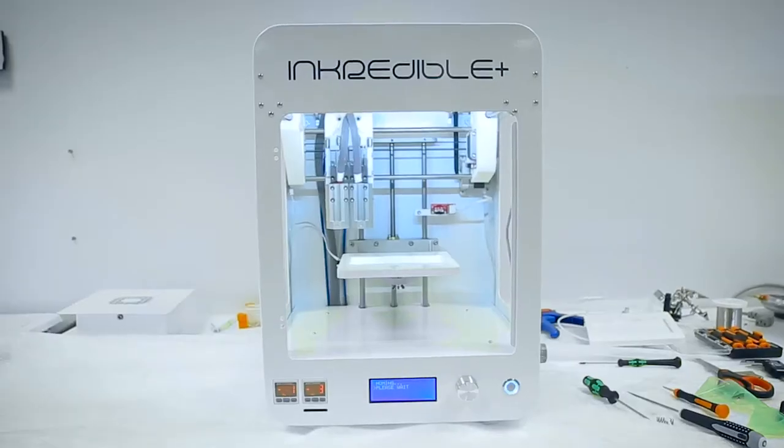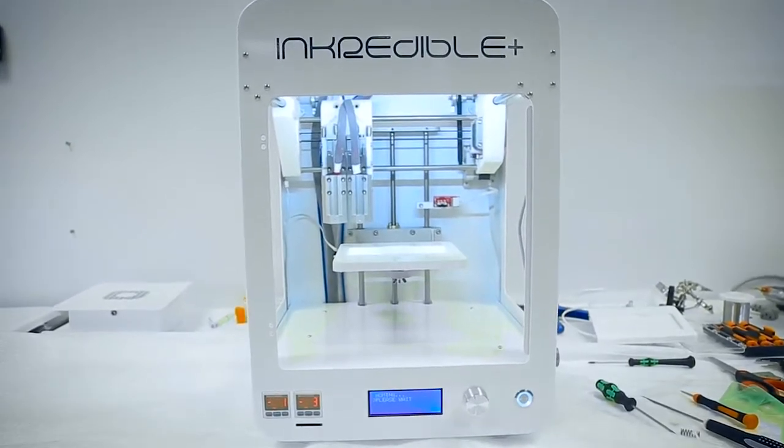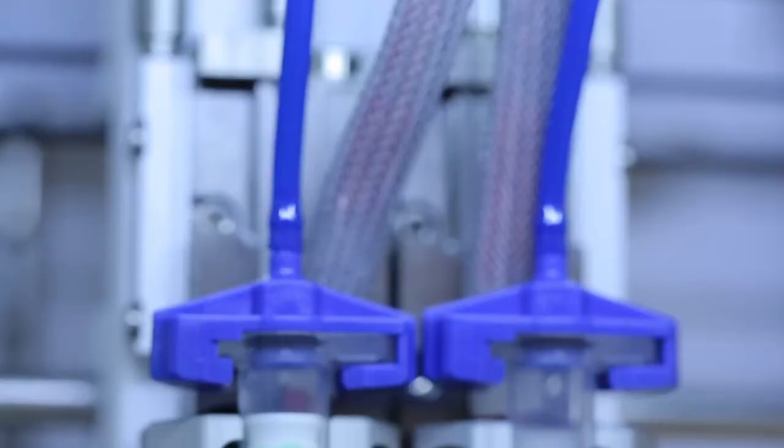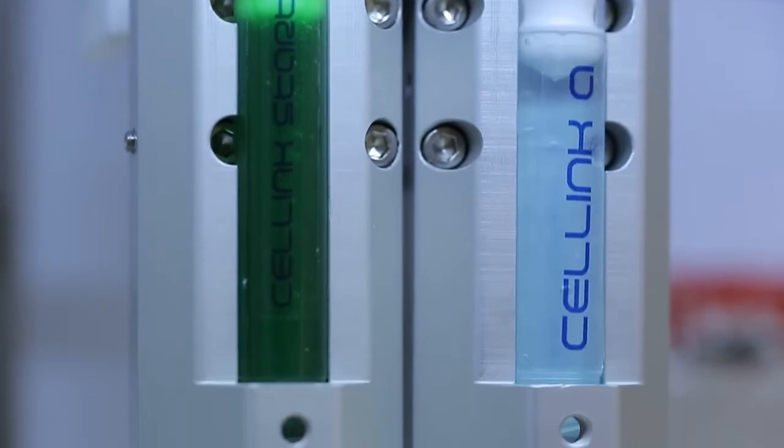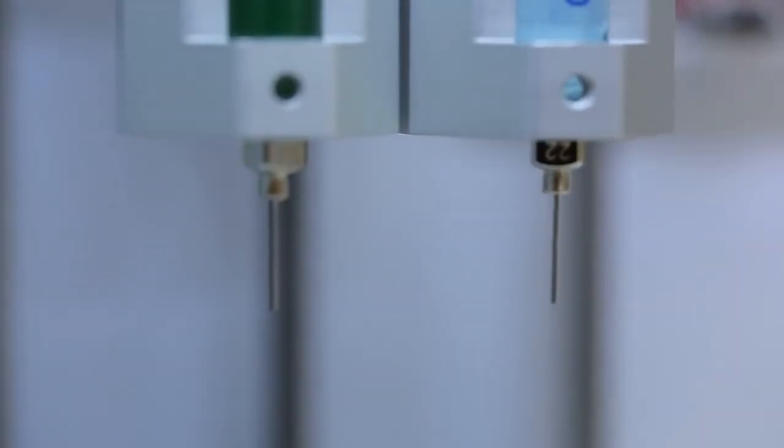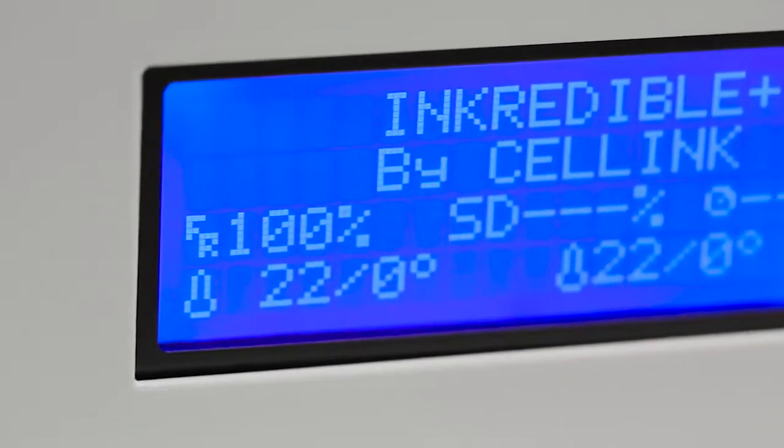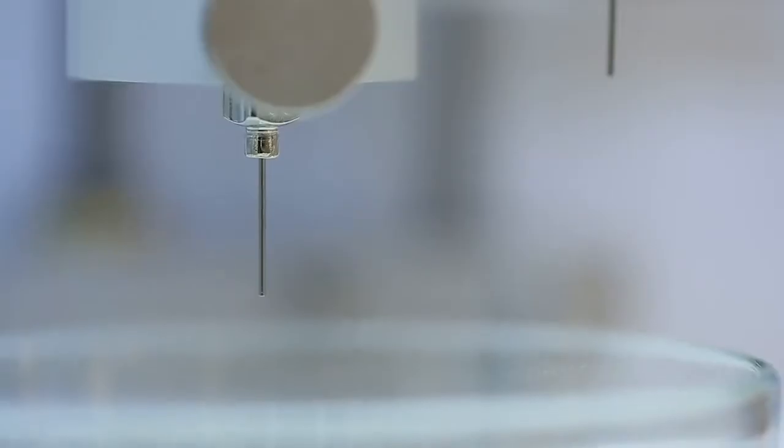With an increase in chronic diseases, an aging population, and a lack of human tissues and organs, the market for 3D bioprinting continues to grow rapidly. One of the companies at the cutting edge is Gothenburg-based company Cellink, who is now preparing a full-scale expansion.